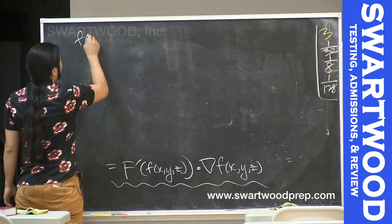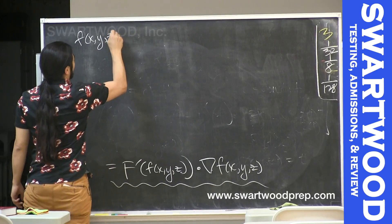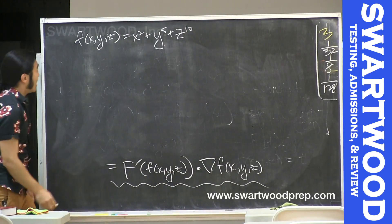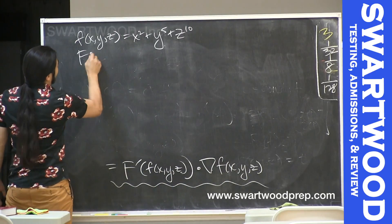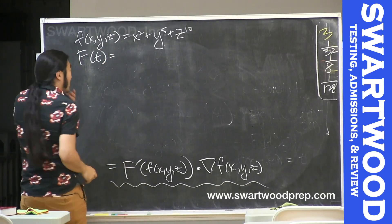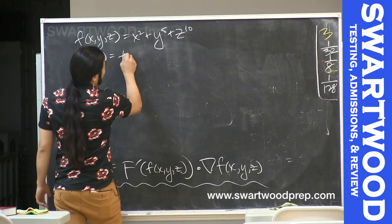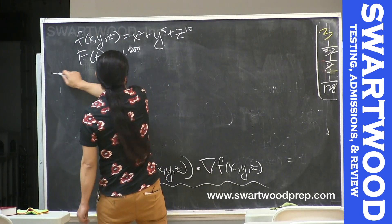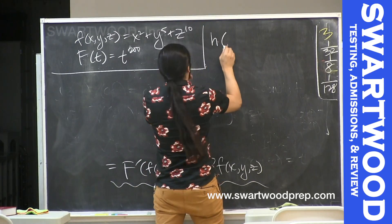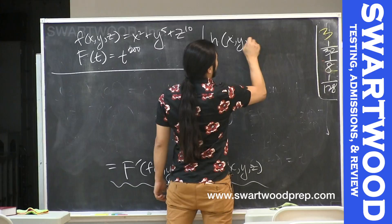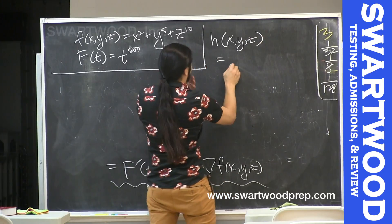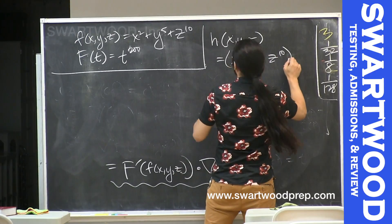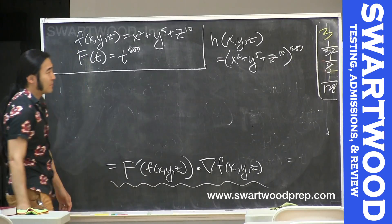A generic example might be something like this. Let's say f(x,y,z) is something like x squared plus y to the fifth plus z to the tenth. And let's pick maybe big F to be something like F(t) is going to be t to the 200. Why not? So what's our composite function? Let's give this guy a name.